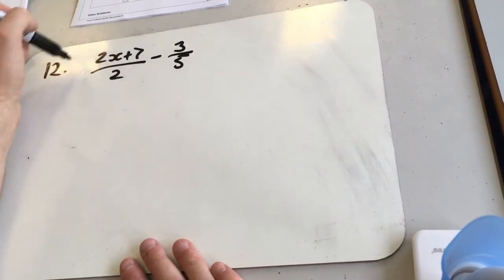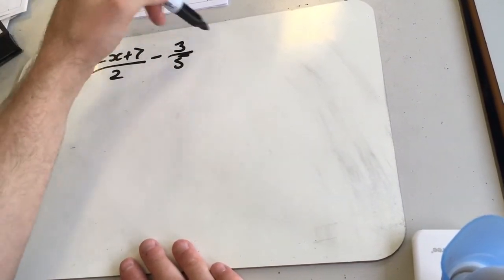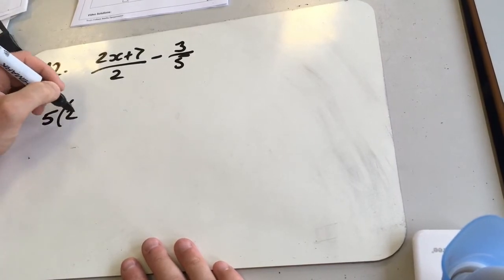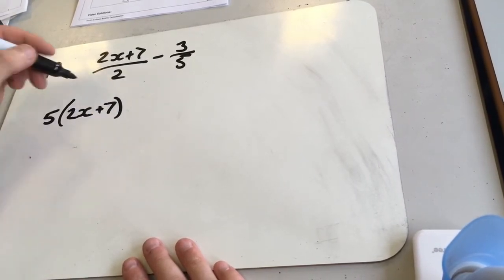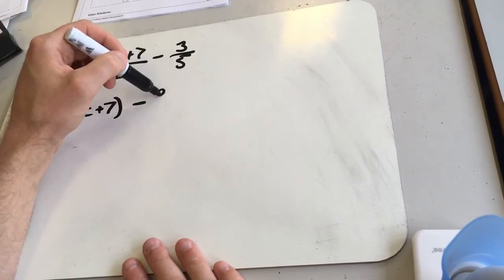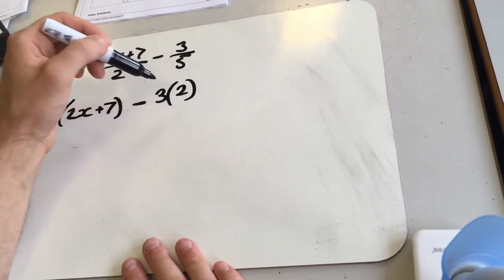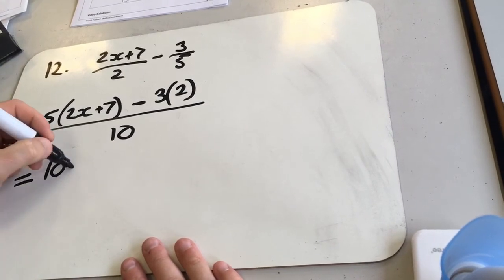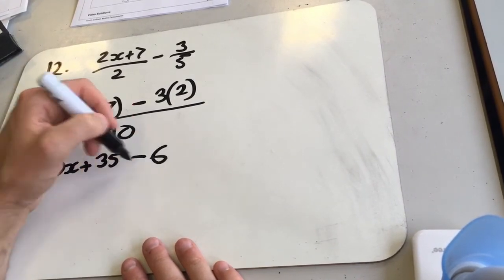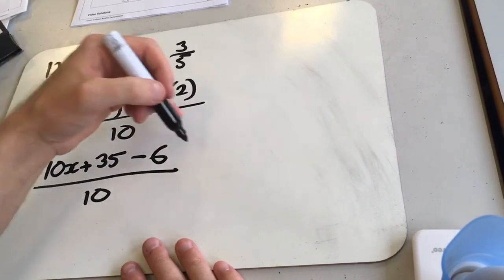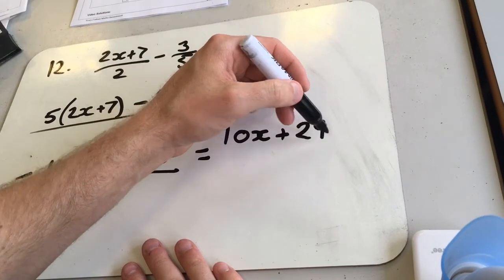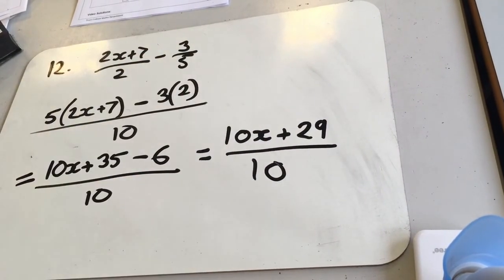So we times this fraction by 5 and times this fraction by 2. So we're going to get 5 lots of 2x plus 7 minus 3 lots of 2 all over 10, which gives us 10x plus 35 take 6 over 10, which is 10x plus 29 over 10.